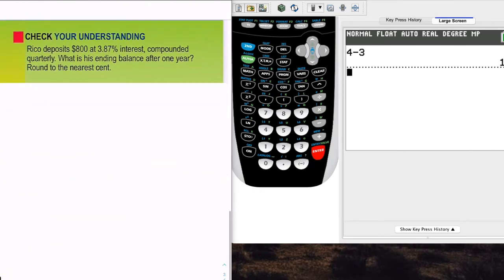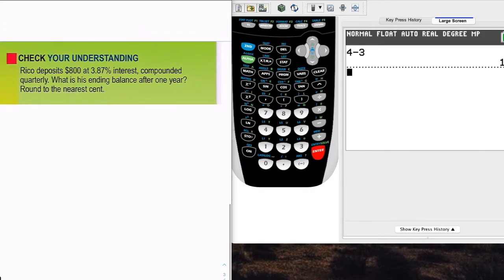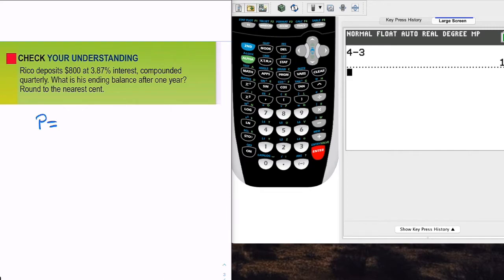Now, to really understand that, if we apply that to something that really shows us some money now, here we have checking for understanding that Rico deposits $800, so his principal investment is $800. His interest is 3.87% per year, but that becomes a rate then of 3.87 divided by 100. We'll express that as 0.0387. And we're talking about quarterly, so N is going to equal 4.